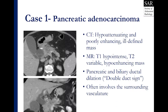On CT, the lesion is classically hypoattenuating on non-contrast images and poorly enhancing on post-contrast images. The mass itself is often ill-defined and hard to evaluate the exact boundaries of the tumor. This is secondary to the tumor becoming blended in with the adjacent parenchyma as well as surrounding desmoplastic changes. On MR imaging, the mass is usually T1 hypointense with variable signal on T2-weighted images, but like CT, when you give IV contrast the mass will become hypoenhancing in comparison to the adjacent pancreatic parenchyma.